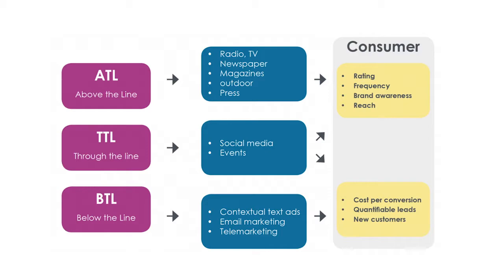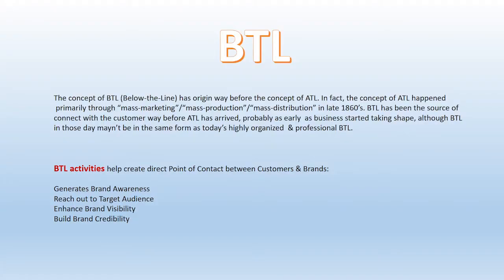This is a general chart: we have ATL above the line, TTL through the line, and BTL below the line. In the middle we have the means for these three tools, then we have the consumer and the ways to measure the effect of these methods, and we are explaining them one by one. We start with BTL.